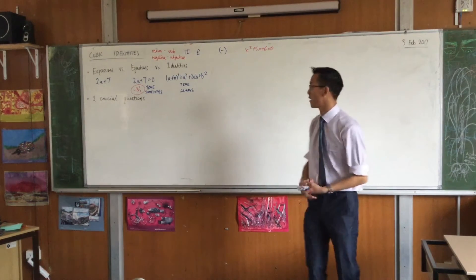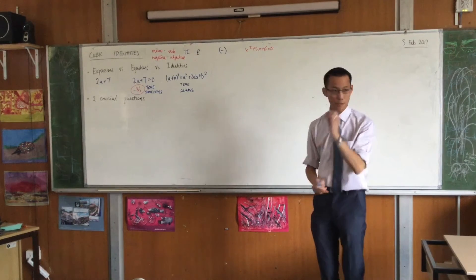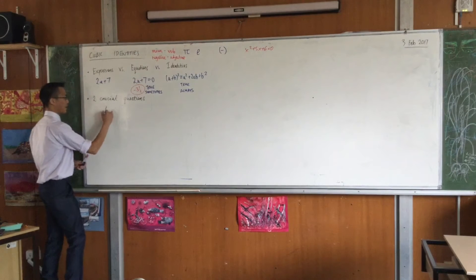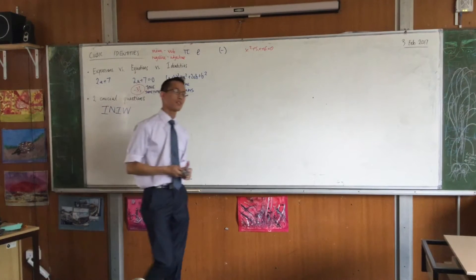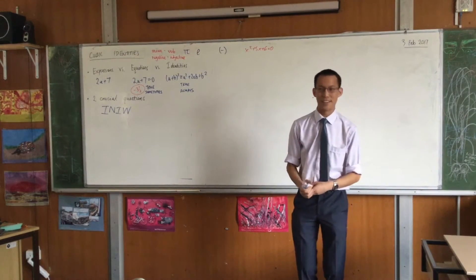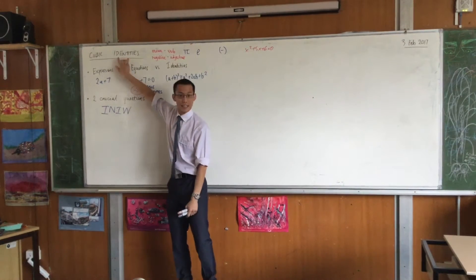So now you know what identities are, you've got your head wrapped around them. We're going to look at four cubic identities today, but before I show them to you, I need you to understand two crucial questions, and there's an acronym for these two questions. I'm pointing it out here because I want you to ask these two questions all the time about everything, but particularly about mathematics and particularly about these identities I'm going to show you.